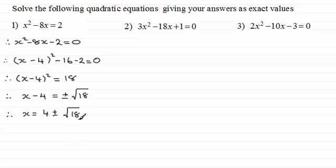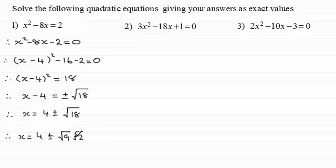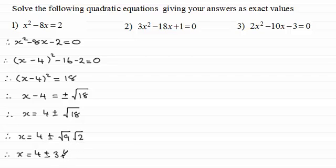You could leave it like that, but the square root of 18 can be simplified using surds: root 18 equals root 9 times root 2. The square root of 9 is 3, and we can't simplify root 2 further, so the answer in exact form is x equals 4 plus or minus 3 root 2.